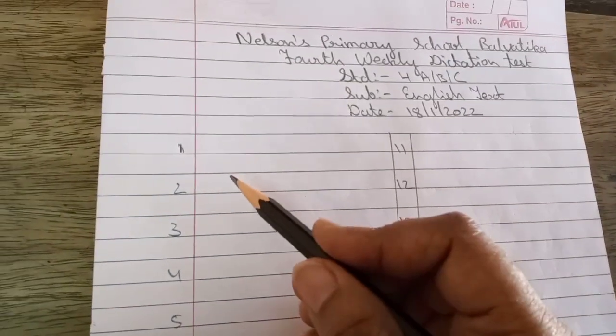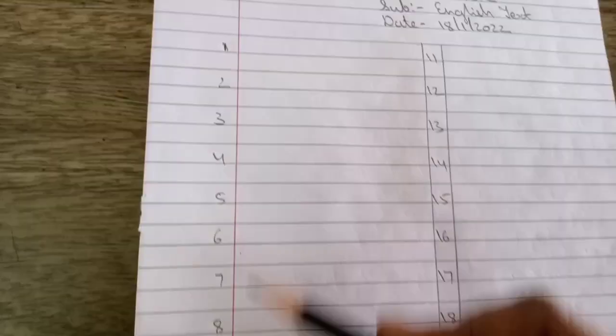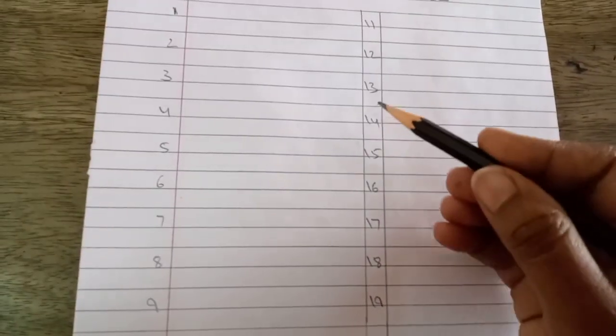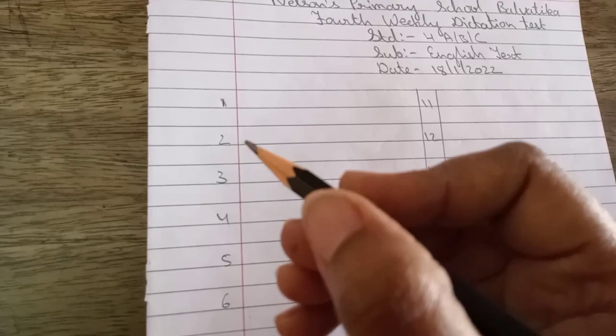Then you have to draw a line over here in between. Okay, so one side you will write 1 to 10 numbers and another side you write 11 to 20. And you have to leave one line and then you have to start the test.